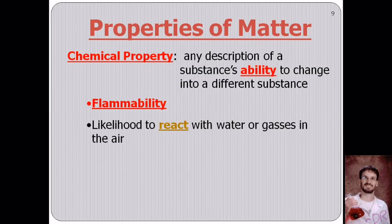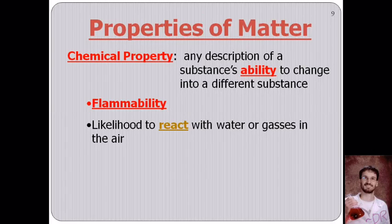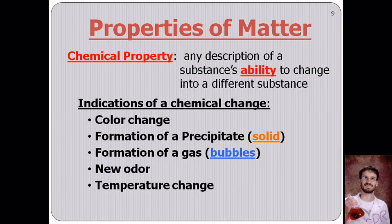A chemical property is a description of any substance's ability to actually change into something new. The most common example when talking about chemical properties is flammability — gasoline has the ability to burn and turn into different substances, releasing energy. Iron and water will rust, turning into a new material called rust, also known as iron oxide. Similarly, paper or wood burning turns into ash and smoke.